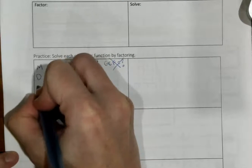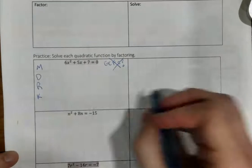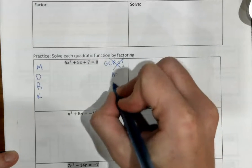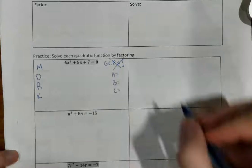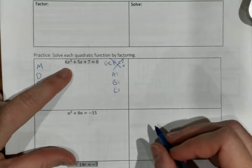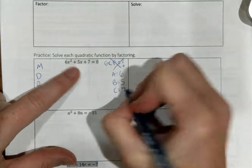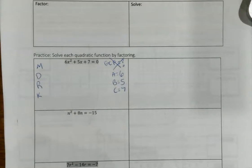Let me go ahead and write out, and then on top of that, I also need to write the A, the B, and the C. You guys are really good at identifying the A, B, and C at this point. The A is 6, the B is 5, and the C is 7, and they're all positive numbers.